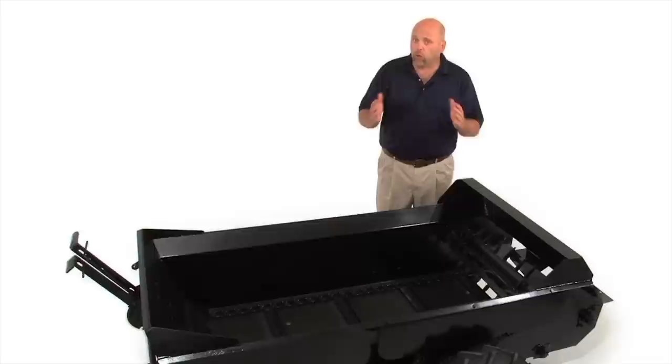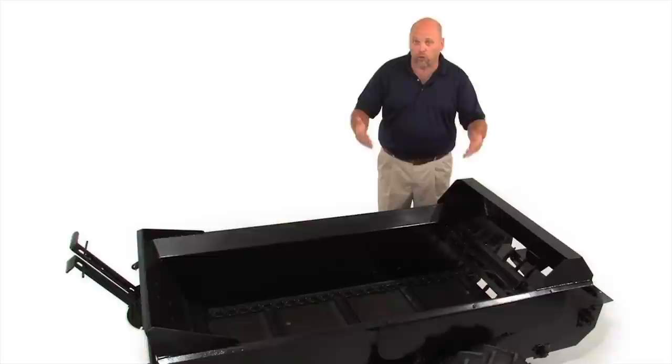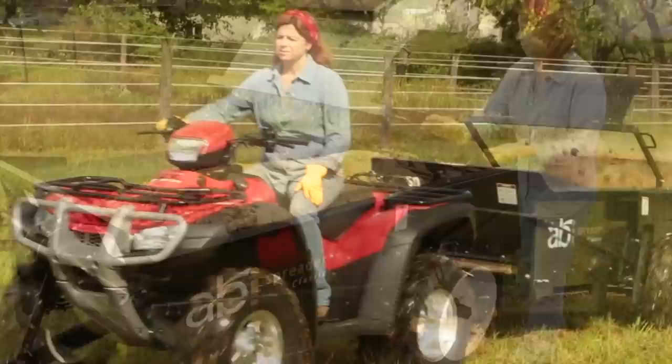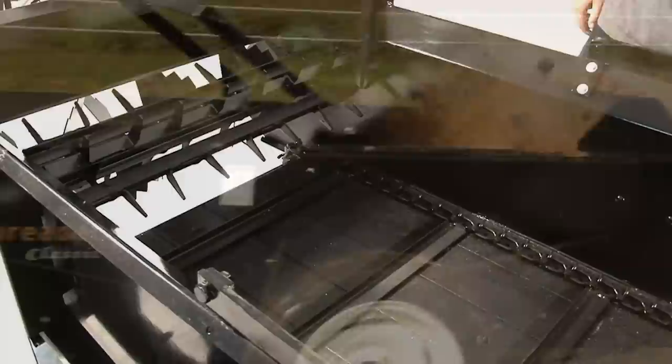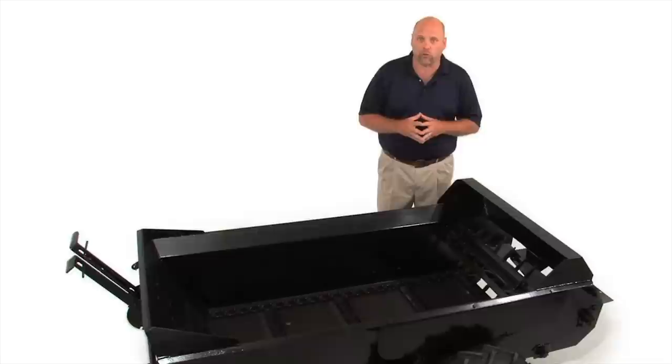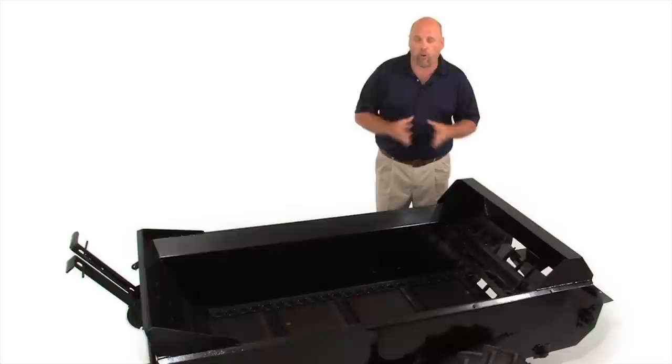We do have an option that is not shown on this manure spreader here and it's called our end gate. If you are looking for an absolutely pristine and purely clean aisle way as you're picking your stalls you might want to look into our optional end gate. It attaches to the middle of the spreader and it manually on the small spreaders folds back and protects the manure from going out the back. If you want we have that option available to you just check in with us.